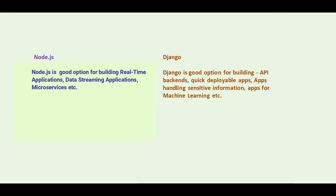Node.js is a good option for building real-time applications, collaborative tools, data streaming applications, microservices, etc. And Django is a good option for building API back-ends, quick deployable apps, apps handling sensitive information, apps for machine learning, etc.